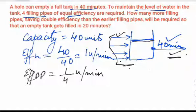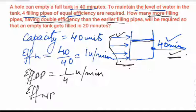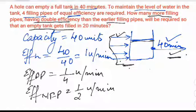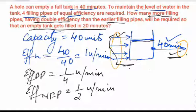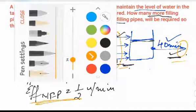The question then asks how many more filling pipes are required if the new pipes have double the efficiency of the earlier ones. The efficiency of the new filling pipes is double, so it becomes 1/2 unit per minute, such that an empty tank gets filled in 20 minutes. When the original four filling pipes plus the hole are working, the water level stays constant — it won't fill up on its own.